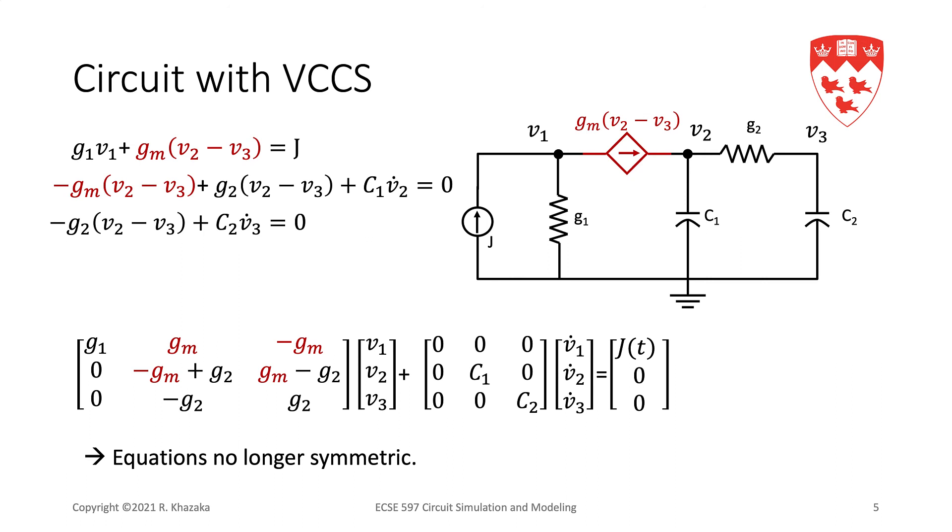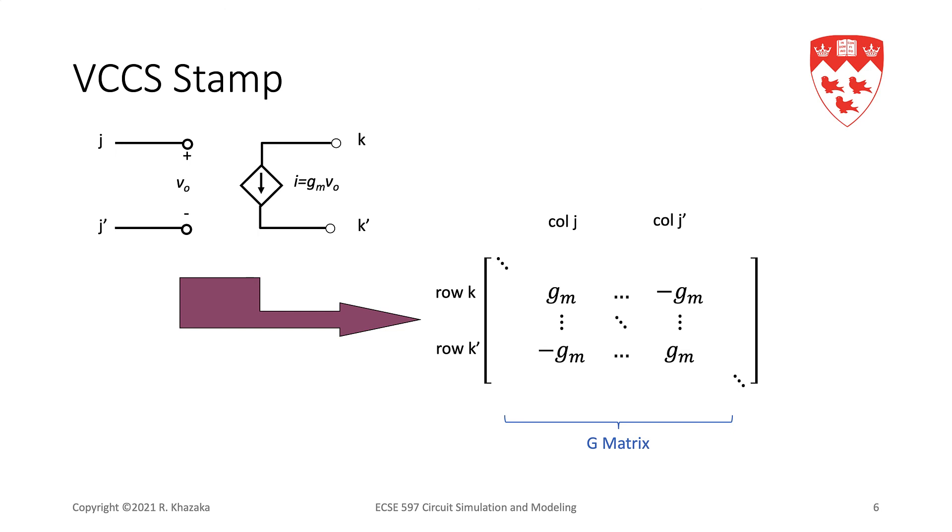So, in general, then, our stamp for the controlled source is Gm minus Gm minus Gm Gm in row K, row K prime, where the source is connected, and column J, column J prime, the nodes corresponding to the controlling voltages.